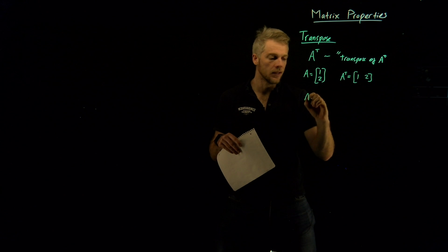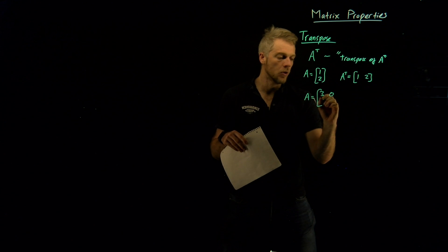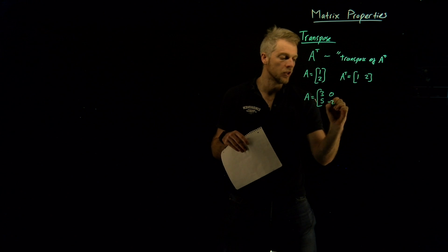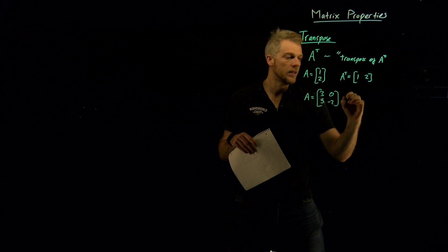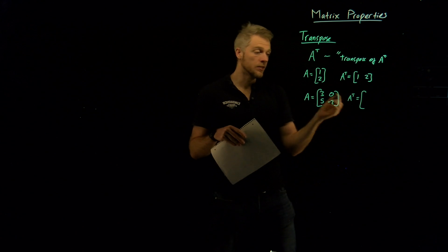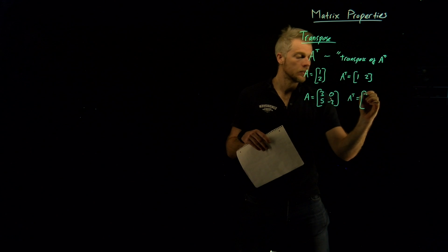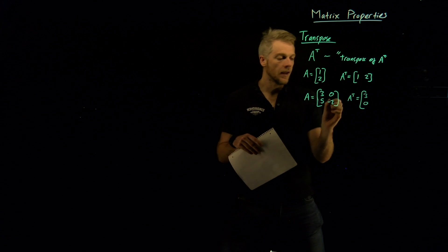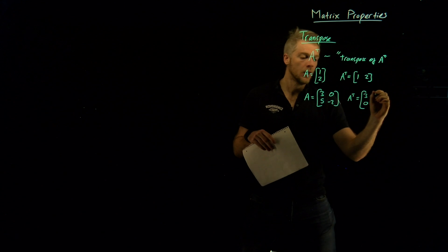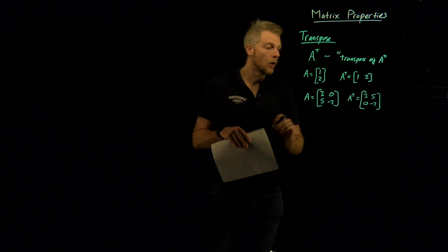Let's cover another example. Let's say we have a 2 by 2 matrix. Let's say 3, 0, and then 5 and minus 2, for example. What would be the transpose in this case? Well, we turn our rows into columns and our columns into rows. So our first row is 3, 0. So that becomes our first column. And the second row is 5 minus 2. So that becomes 5 and minus 2, like this. That would be your transpose.